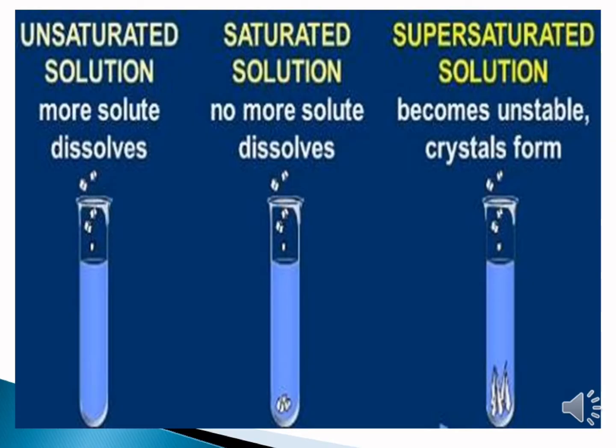When there is less amount of solute dissolved in a given amount of solvent, the solution is said to be unsaturated. While when there is a maximum amount of solute in a given amount of solvent, then the solution is saturated. And supersaturated when it becomes unstable and forms crystals.